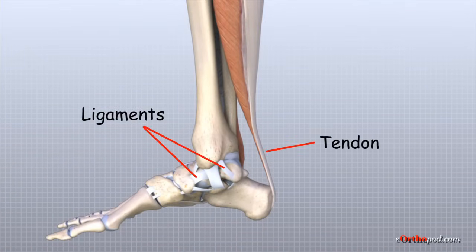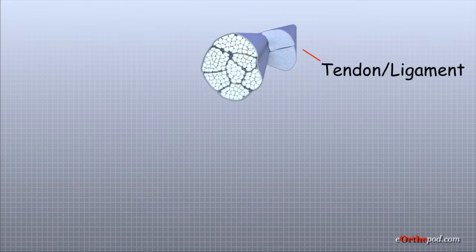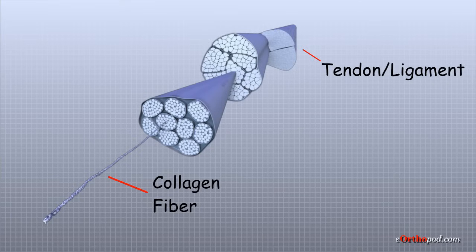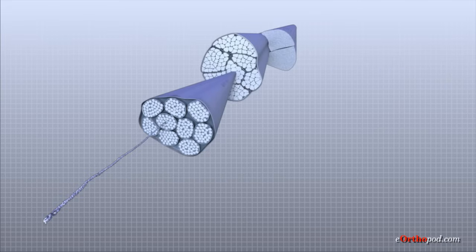Ligaments and tendons are soft tissues that attach bones to other bones and muscles to bones. Ligaments attach bones to other bones, while tendons attach muscles to bones. Both structures are made up of small fibers of a material called collagen, which are bundled together to form a rope-like structure. Ligaments and tendons come in many different sizes and shapes, and their thickness determines their strength.